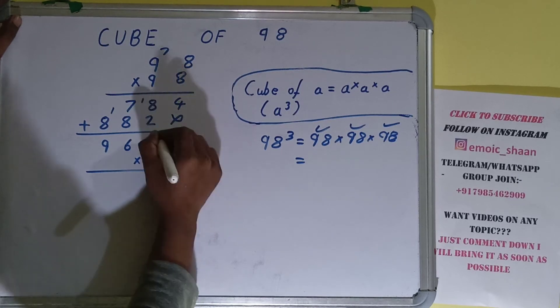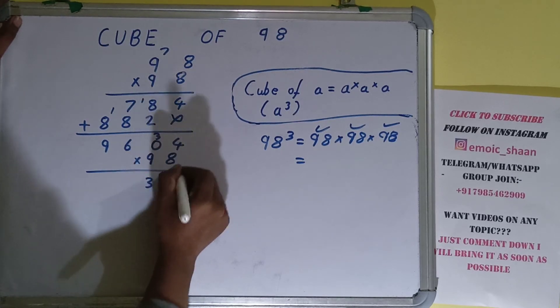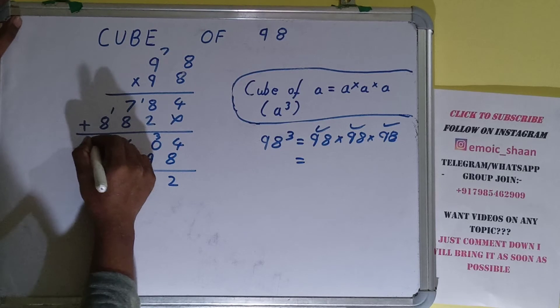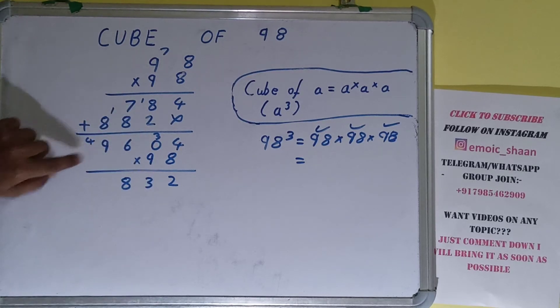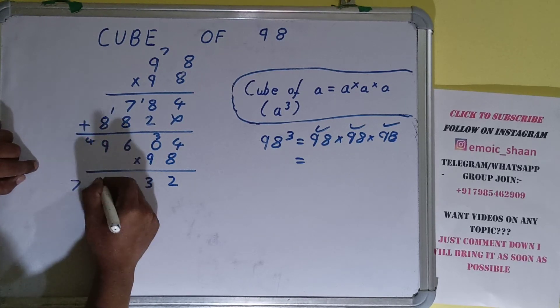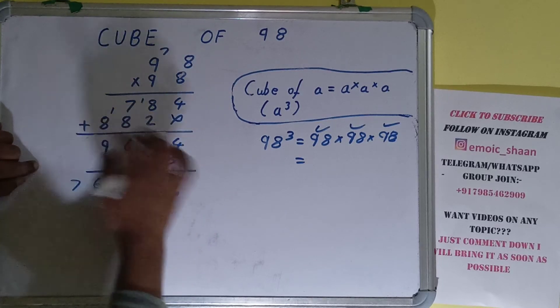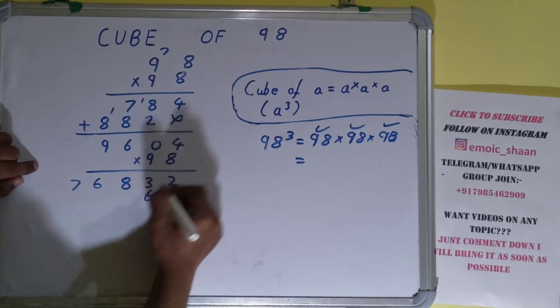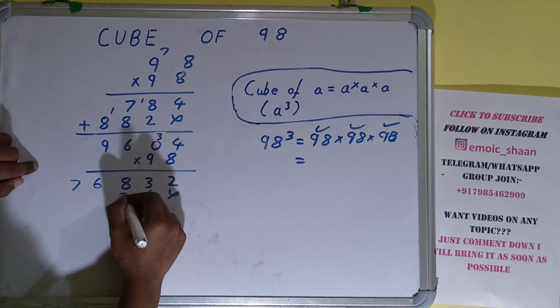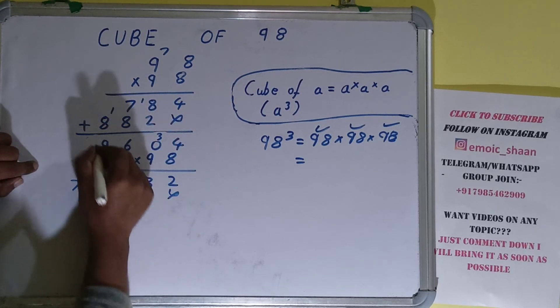8 times 4 is 32, 3 carry. 8 times 0 is 0, 3 down. 8 times 6 is 48, 4 carry. 8 times 9 is 72 plus 4 is 76. Now with this 9: 9 times 4 is 36, 3 carry. 9 times 0 is 0, 3 down. 9 times 6 is 54, 5 carry.